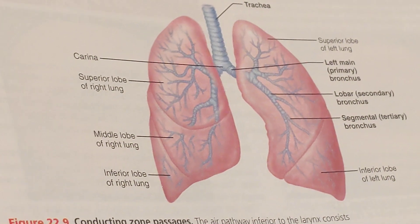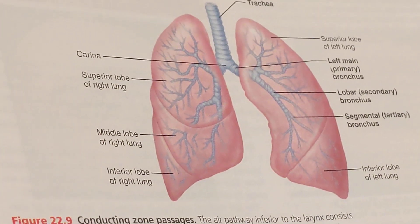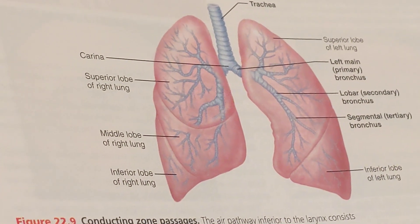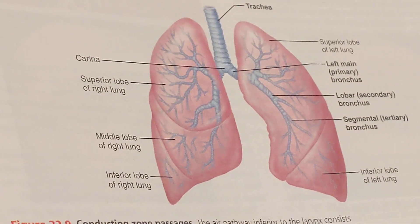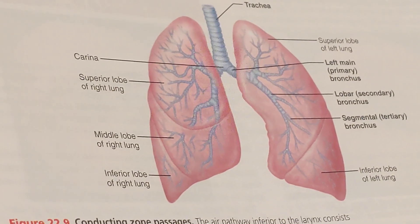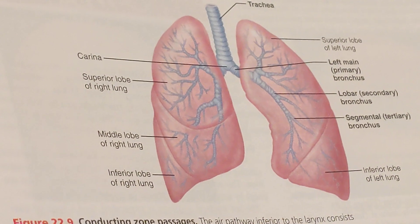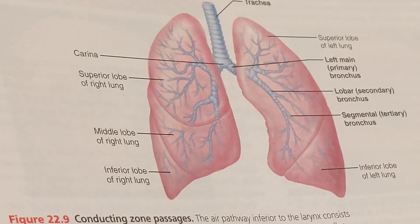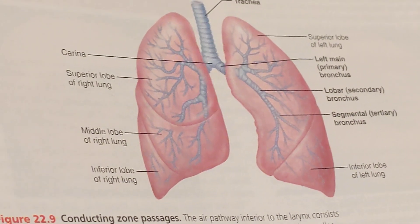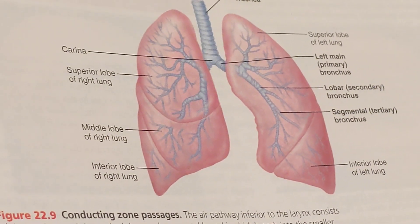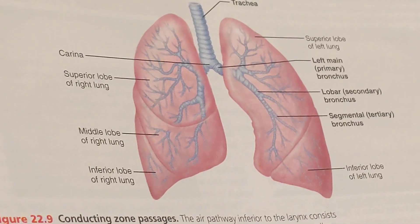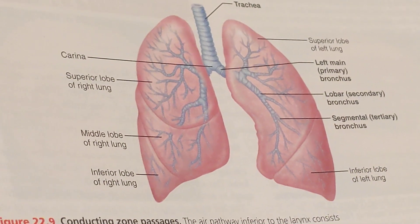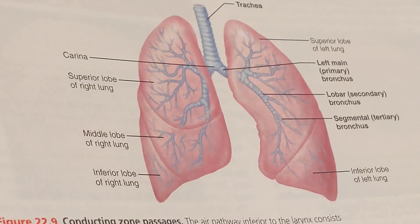When the external intercostal muscles contract, the ribcage is lifted upward and the sternum is pulled upward as well. When the ribs are raised, they swing outward and this expands the diameter of the thorax.